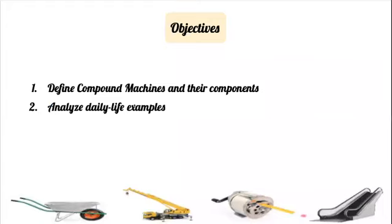First, I'm going to outline the objectives of today's class. Firstly, we will define what a compound machine is and the different components that constitute a compound machine. And then we're going to analyze different daily life examples of a compound machine and its different components.